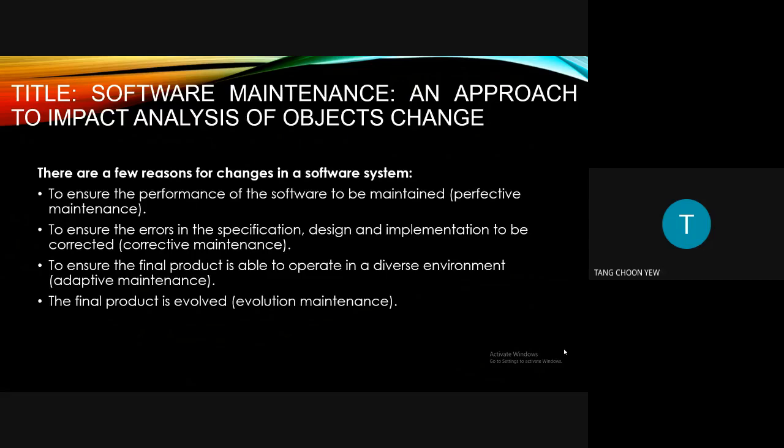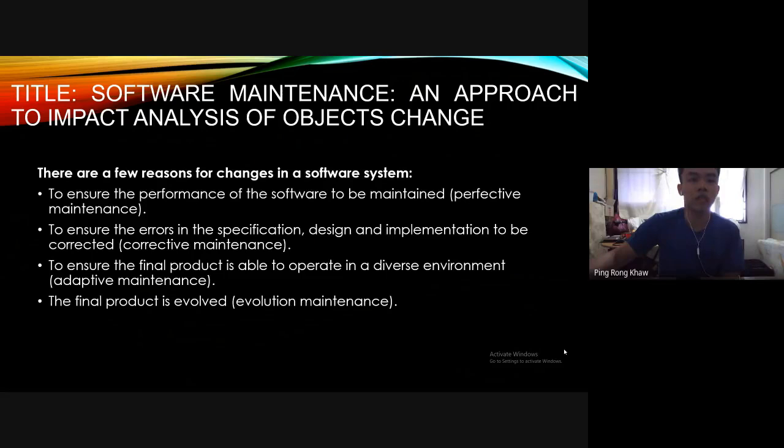The second reason is to ensure the errors in the specification, design, and implementation are corrected, which is known as corrective maintenance. The third is adaptive maintenance, which ensures the final product is able to operate in a diverse environment. And the last one is evolution maintenance, which addresses when the final product needs to evolve.